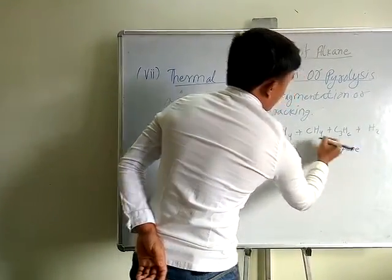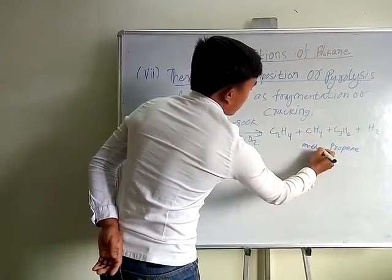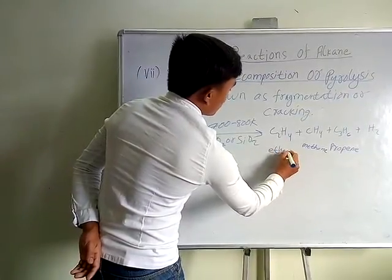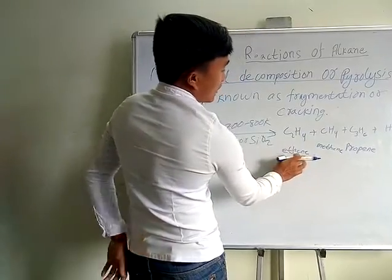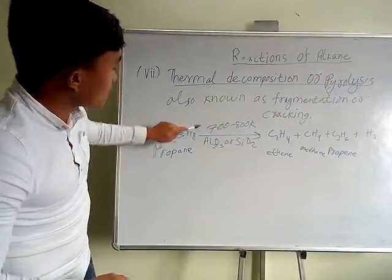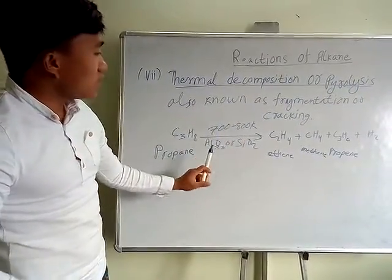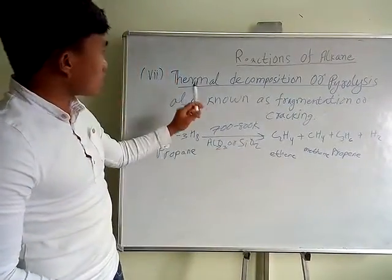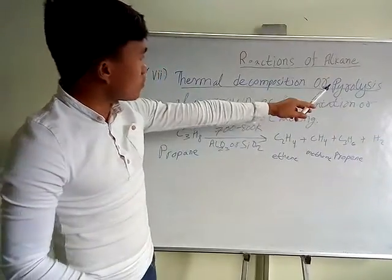This is propane, and this is methane, and this is ethane. Now the different alkanes give many compounds. So if we use this catalyst with this heat, this temperature, we get so many compounds. This is known as decomposition or pyrolysis.